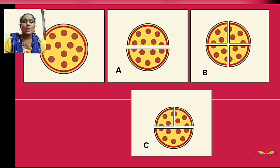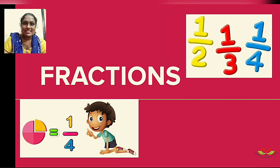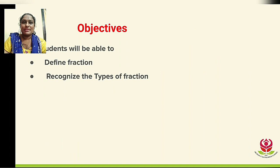The correct option is option B — one whole pizza is divided into four parts, since you are a family of four, divided equally so each one gets the same number of parts. We write this as a fraction: each one gets one by four part of the pizza. Today let's study fractions. My objectives for today's class: students will be able to define a fraction and recognize the types of fractions.